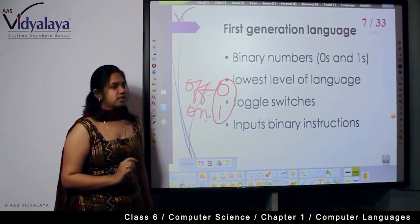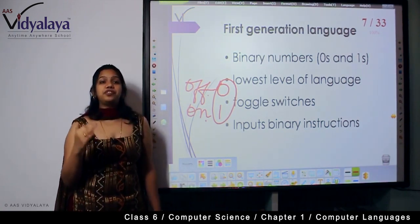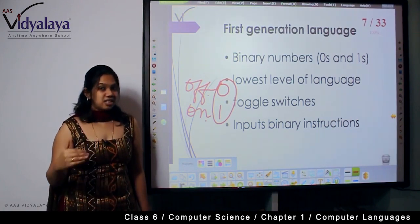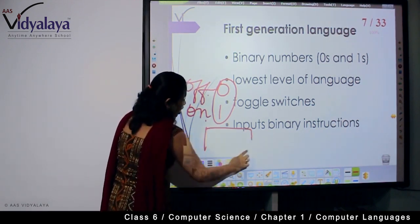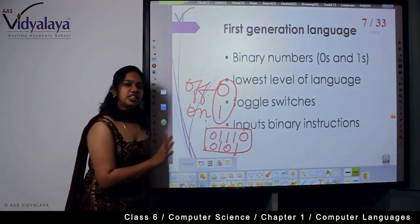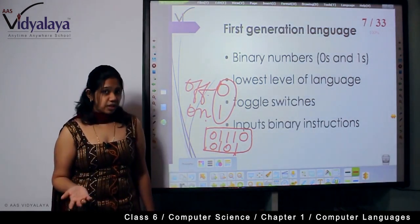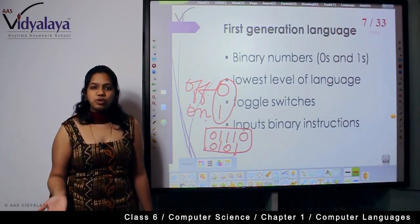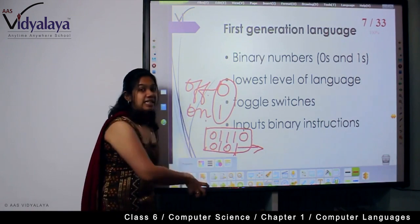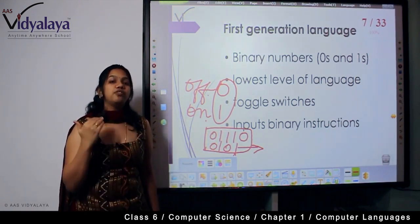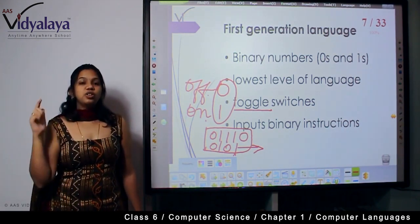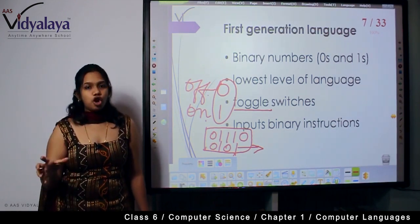This is called the lowest level of language. We are humans and we cannot understand zeros and ones — imagine a set of panel switches being toggled: off, on, on, on, off, off, on, off, on. Will you be able to understand that pattern when someone else reads it? No. So this needs a complete translation for us, but it is the easiest language for machines, which is why it's called the lowest level of language.